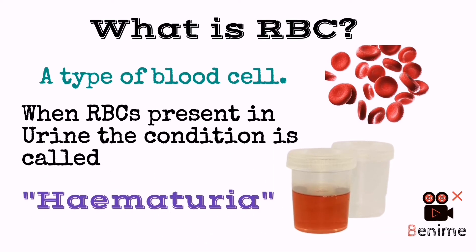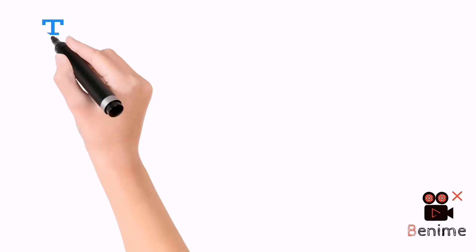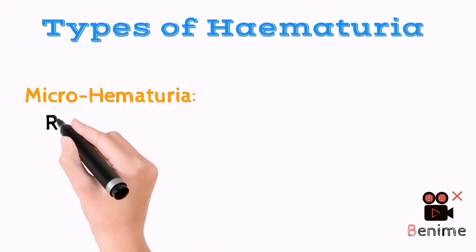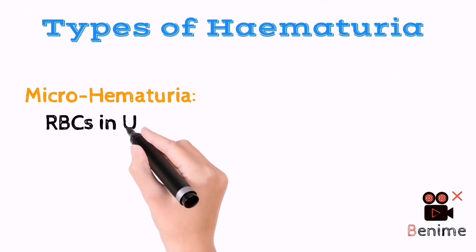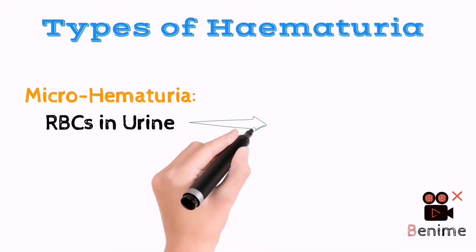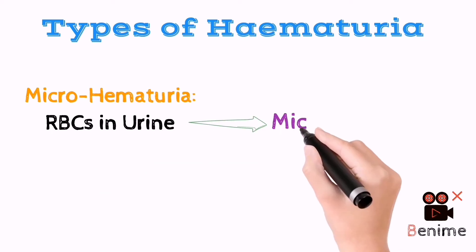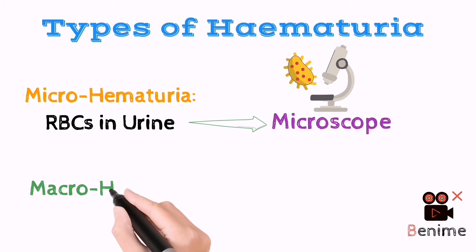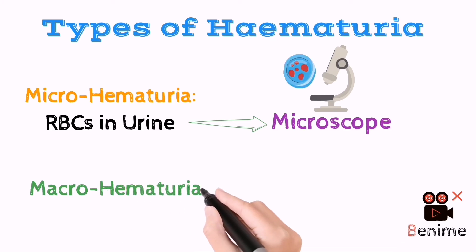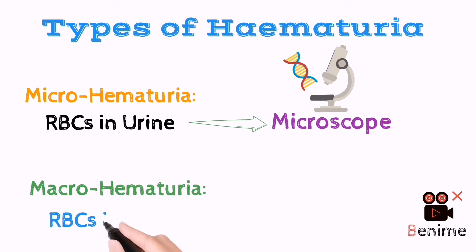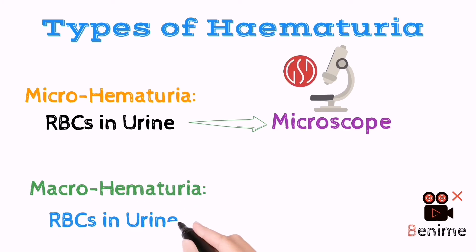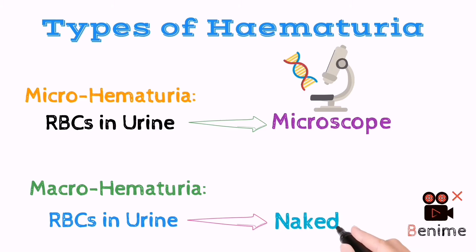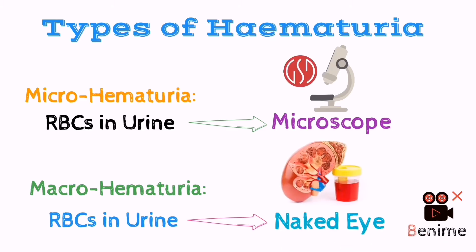There are two types of hematuria. First is micro hematuria, in which the RBCs present in urine can only be seen under a microscope. Second is macro hematuria, in which the RBCs present in urine can be seen with the naked eye.